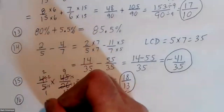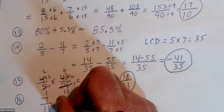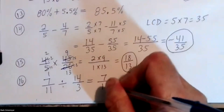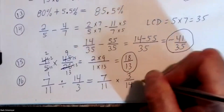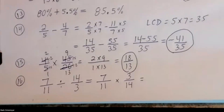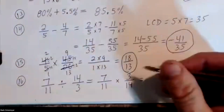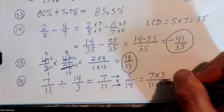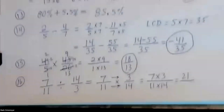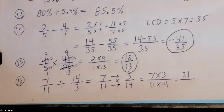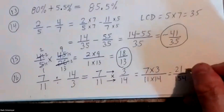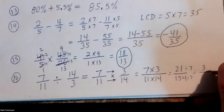Number sixteen: seven-elevenths divided by fourteen thirds. How do you divide? Change division to multiplication, flip second fraction upside down. Multiply across: seven times three is twenty-one, eleven times fourteen is one hundred fifty-four. This does reduce by seven — down to three over twenty-two. There you go.